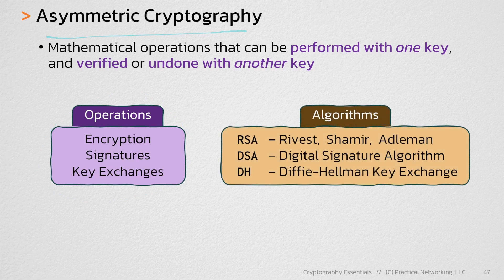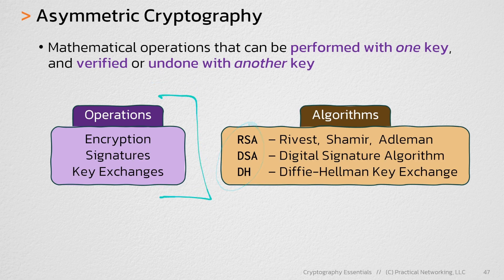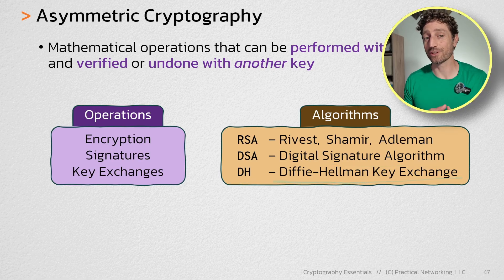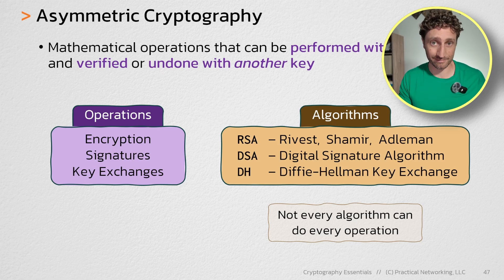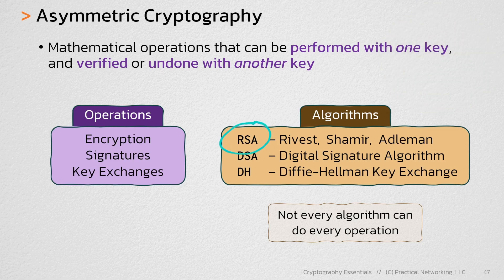Next, I want to talk about the algorithms you can use to perform these operations. There are three possible algorithms for asymmetric cryptography operations. RSA stands for Rivest-Shamir-Adleman — these are the last names of the gentlemen that created this algorithm. DSA is the Digital Signature Algorithm, and DH is the Diffie-Hellman key exchange. RSA is the only algorithm that can be used for all three operations.